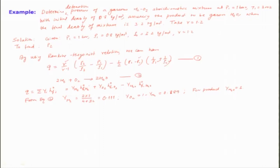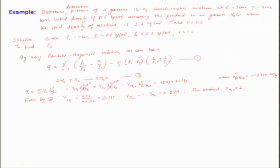Hydrogen and oxygen at standard state have hf° = 0. The hf° of water is approximately −13,434 kJ/kg — you get it in molar units and divide by molecular weight to get it per kg. Then we substitute these values into the Rankine-Hugoniot equation.